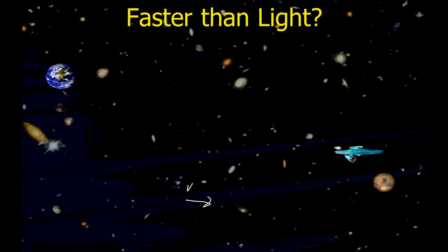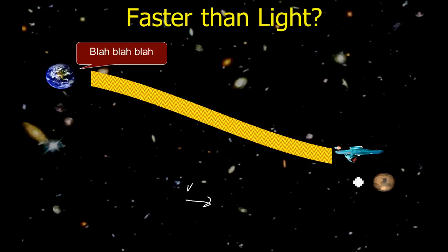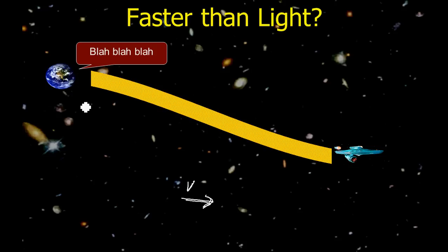Now we're going to discuss communication faster than the speed of light. Imagine Captain Kirk is orbiting Planet X and gets a hyperspace message saying it's a Klingon outpost — destroy it immediately. He does. Later it's discovered Planet X was home to a peaceful civilization, and Captain Kirk is on trial for genocide. He says he was just following orders, but someone flying by in a spaceship at velocity V says that in their reference frame, Kirk destroyed the planet before he received the order.